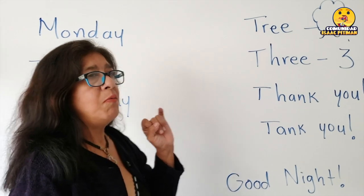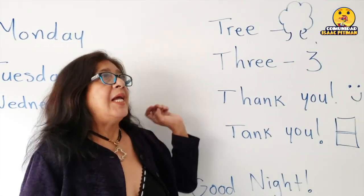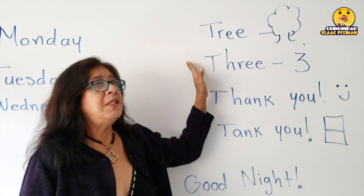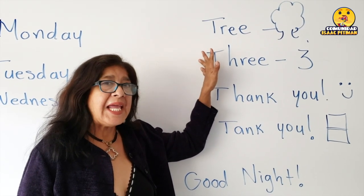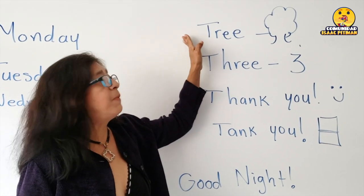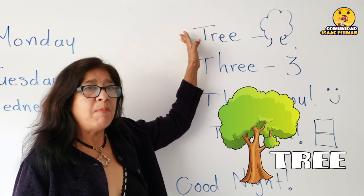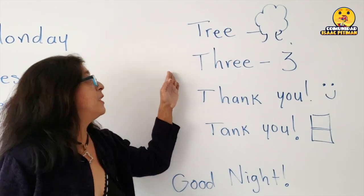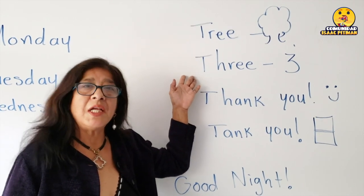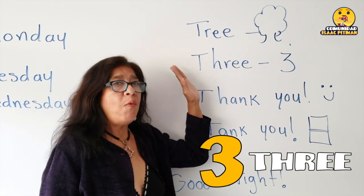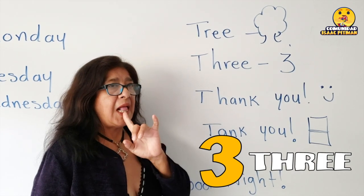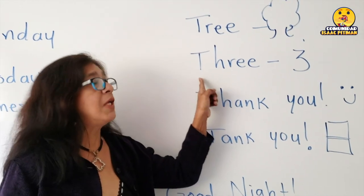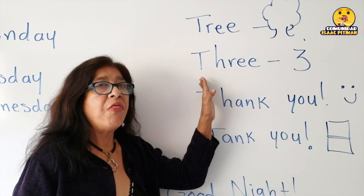Otro error muy común que los alumnos cometen es cuando quieren pronunciar, por ejemplo, el número 3 — ellos dicen 'tree,' que si lo viéramos en inglés, 'tree' es un árbol, aunque ellos realmente quieran decir el número 3. La pronunciación del número 3 en inglés es muy diferente; es un sonido que no tenemos en español. La lengua se coloca entre los dientes y se expulsa aire para hacer ese sonido: 'three.'